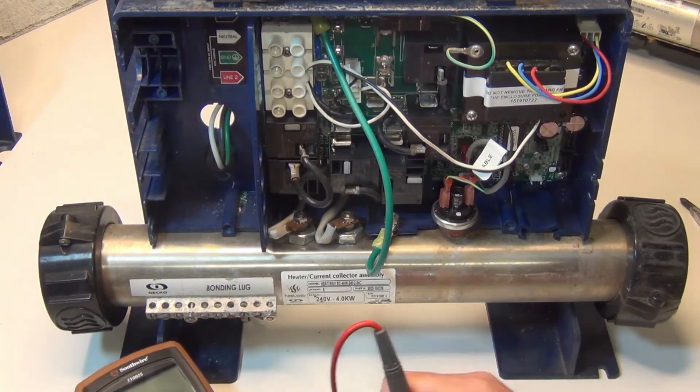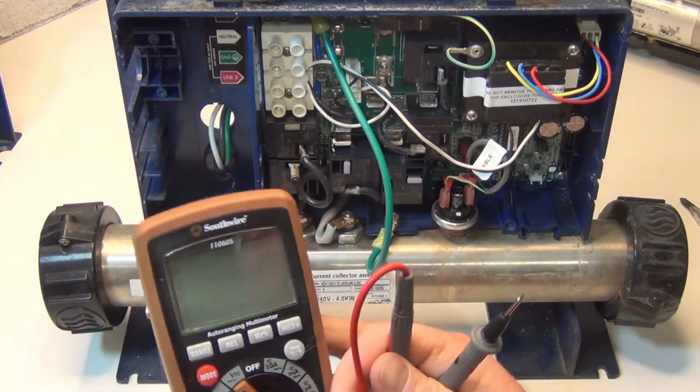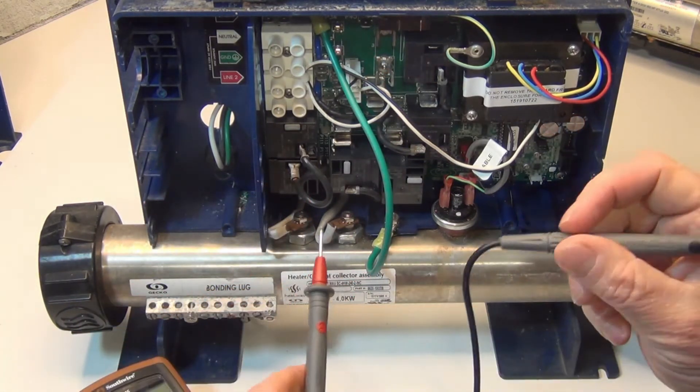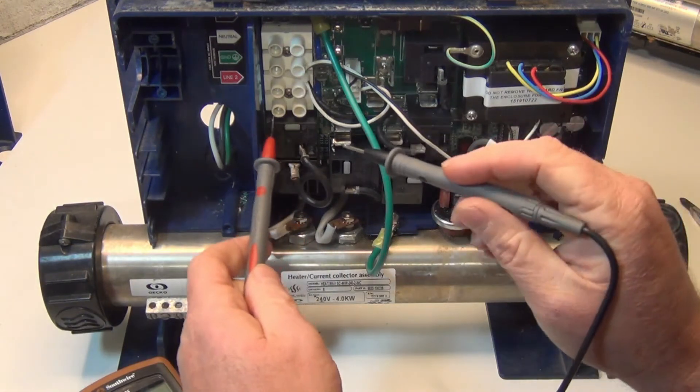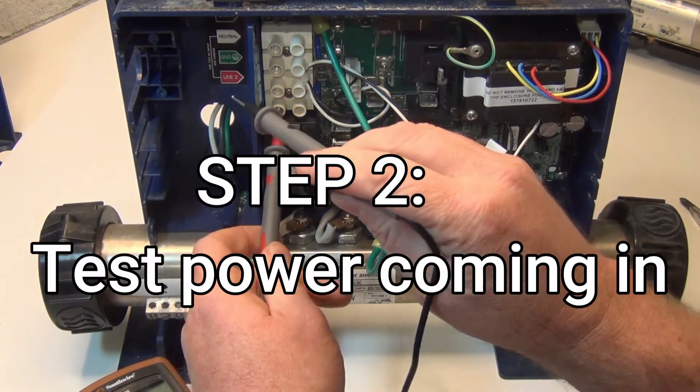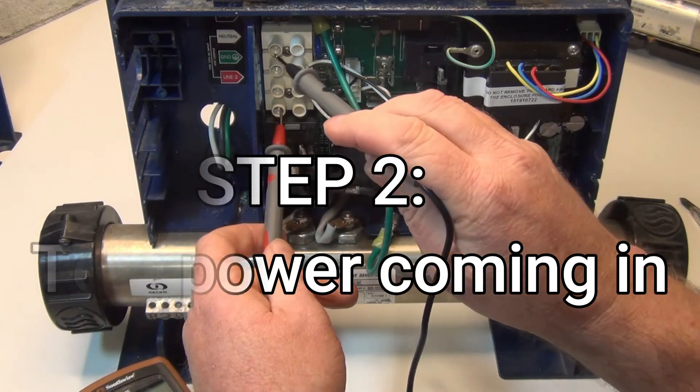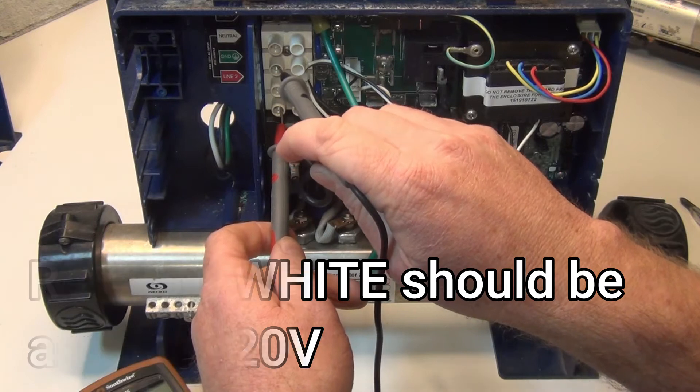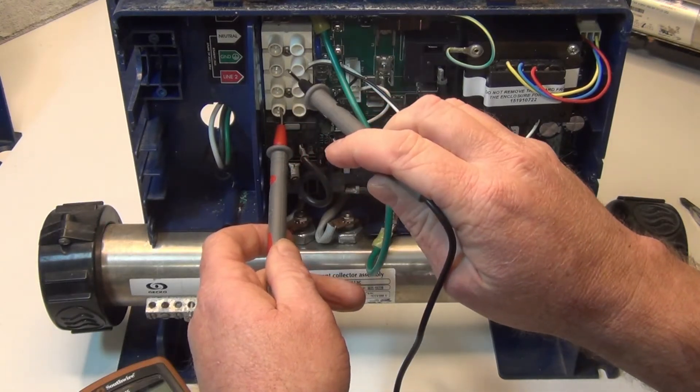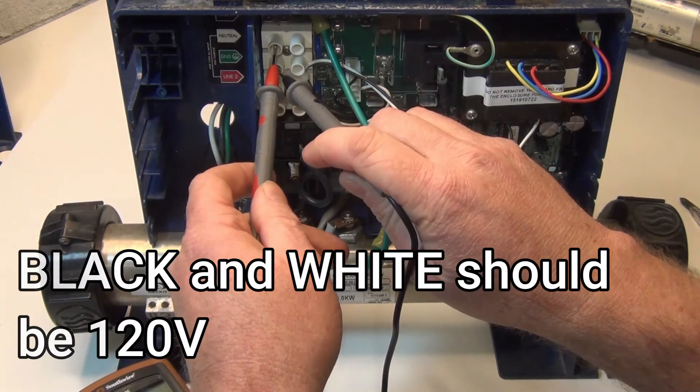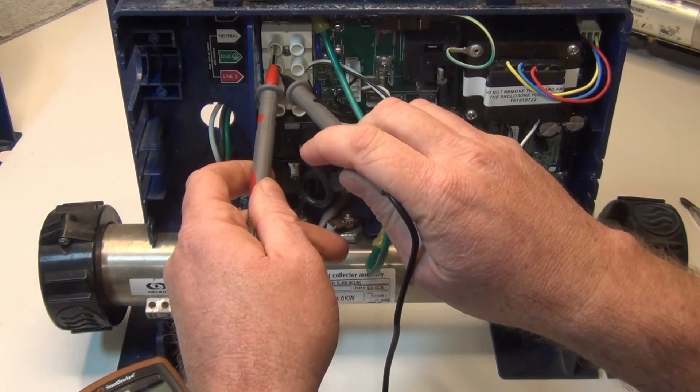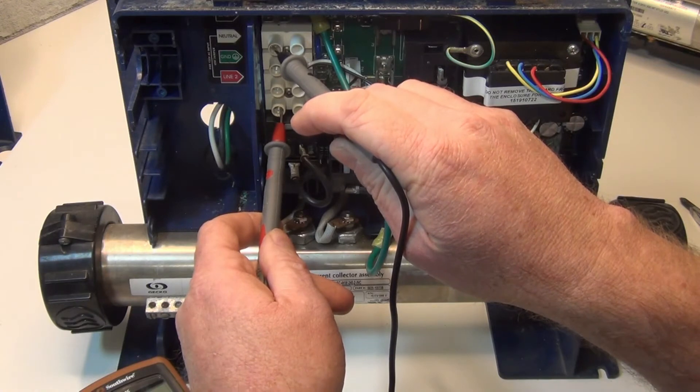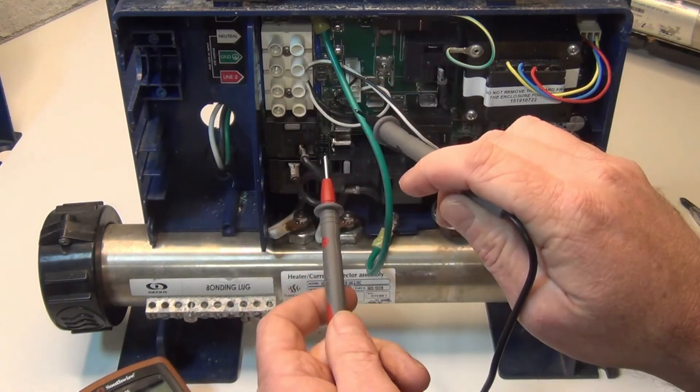The first thing you're going to do is turn it to volts. Test white and red, you should be around 120. White and black should be around 120. Black and red should be around 240, so we know that power is coming in.